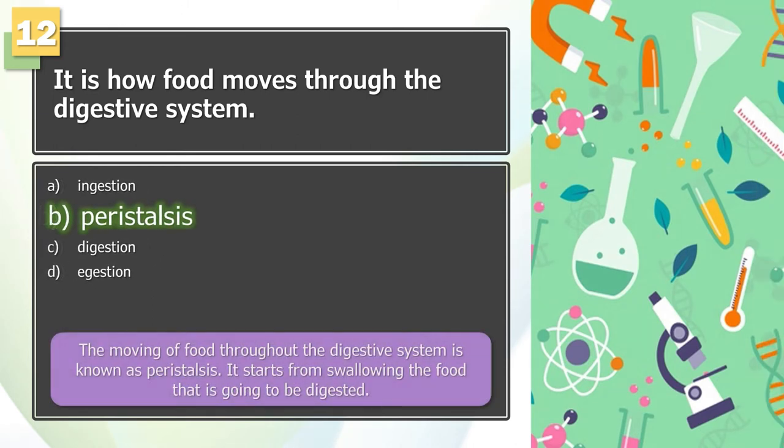The answer is B. The moving of food throughout the digestive system is known as peristalsis. It starts from swallowing the food that is going to be digested.